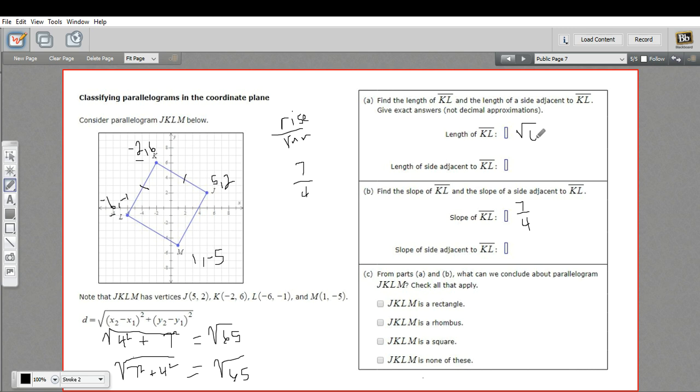These were both square root of 65. Then let's do the side adjacent to KL, let's do JK. So the slope here is going to be a negative number because it's going down. The change in y, 6 down to 2, would be -4. And the change in x, -2 to positive 5, that's positive 7. So -4/7.